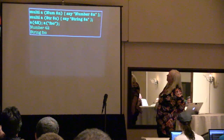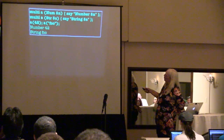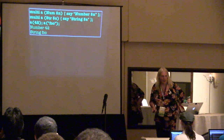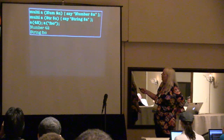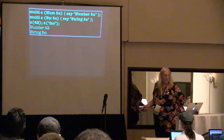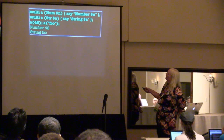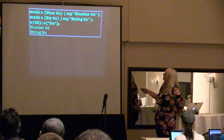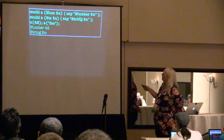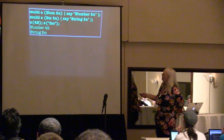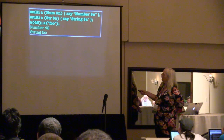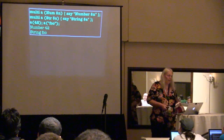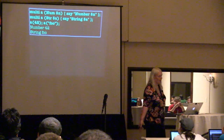So what's multi-method dispatch? You can have multiple subroutines with the same name but with different parameters. So if I call this subroutine with a number, it will say 'number'; if I call this subroutine with a string, it will say 'string'. So I call it with a number, it says 'number 42'; call it with a string, it says 'string foo'. It's as easy as that.